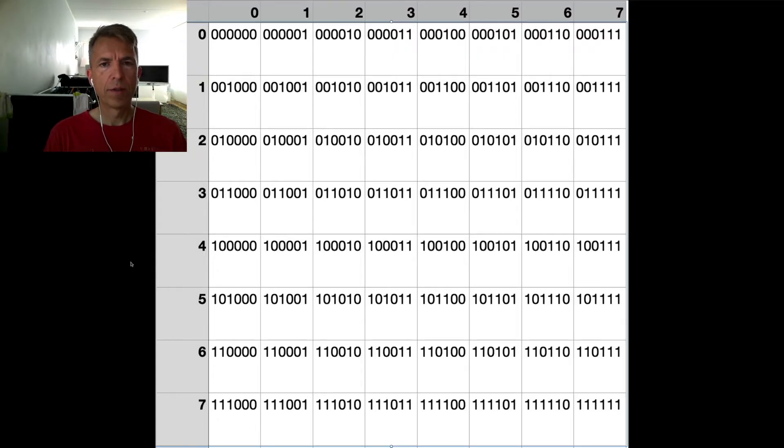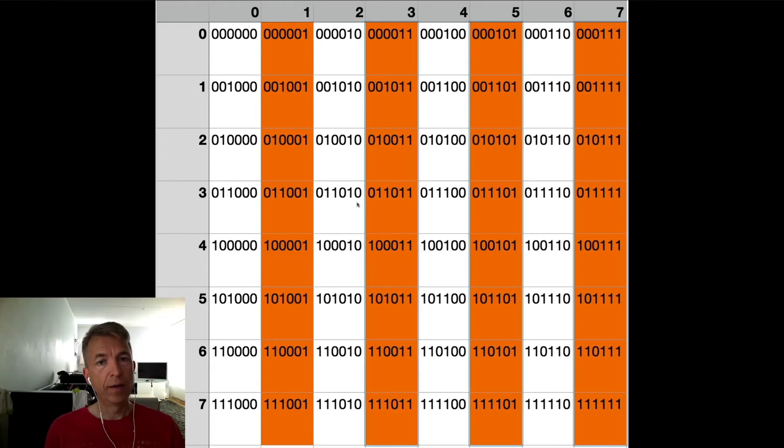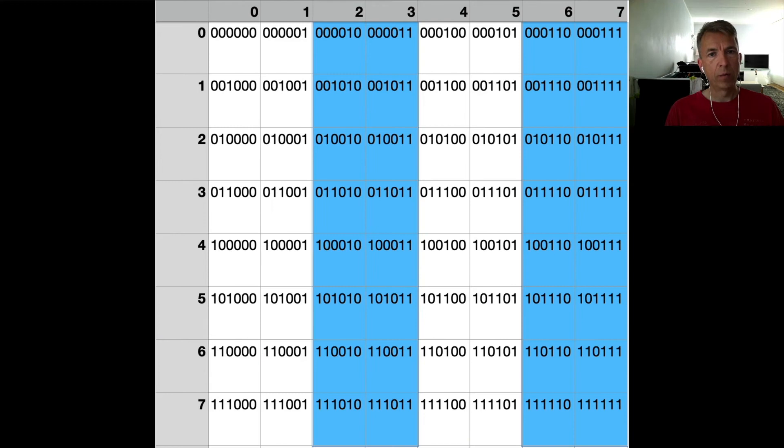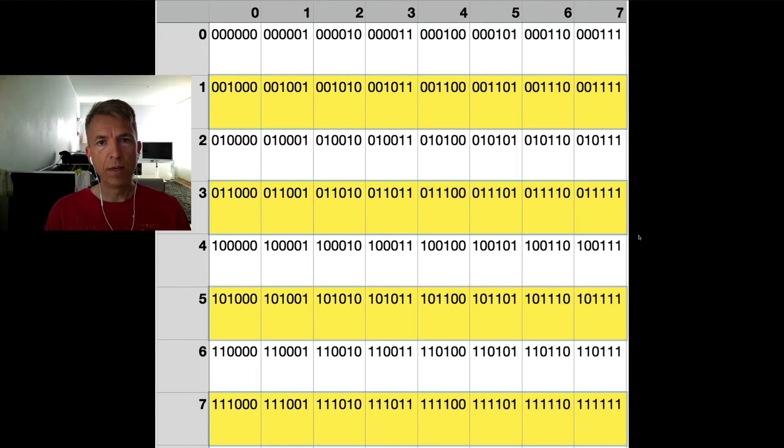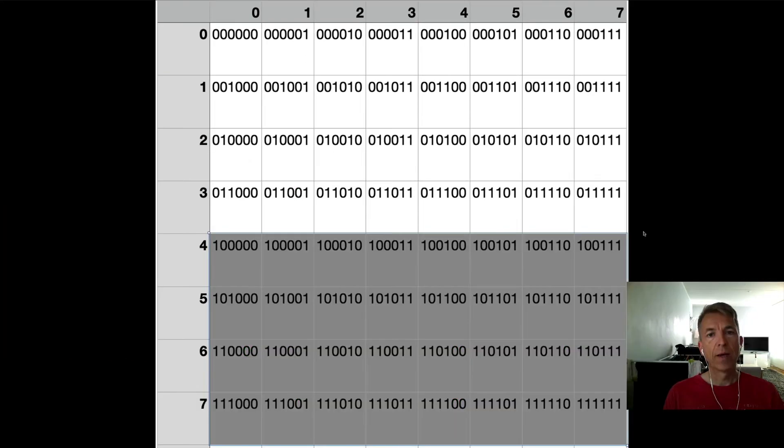And here is how I did it. I numbered the squares using binary numbers from zero to 63. And then I start looking for the areas where each bit is set. And these are all squares where bit number zero, the rightmost bit is set, bit number one set, bit number two set, bit number three, bit number four, and finally the leftmost bit number five.